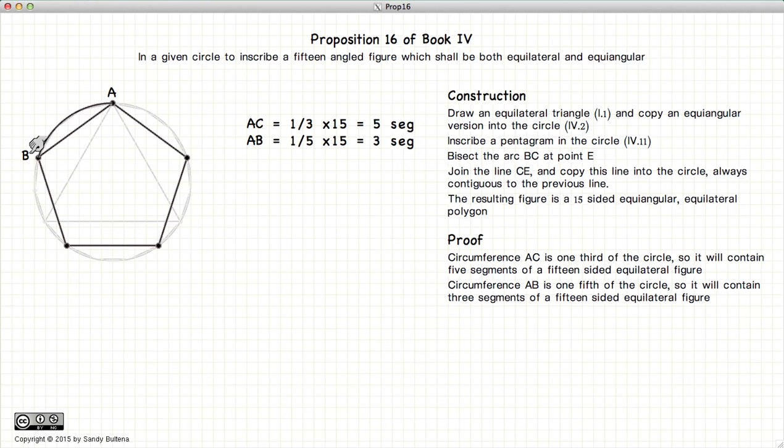Now segment AB is one fifth of the circle. So again, if we have our 15-sided polygon, it would be three segments of the polygon.